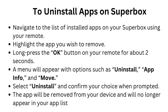To uninstall apps on Superbox, navigate to the list of installed apps on your Superbox using your remote. Highlight the app you wish to remove. Long press the OK button on your remote for about 2 seconds. A menu will appear with options such as Uninstall, App Info, and Move. Select Uninstall and confirm your choice when prompted. The app will be removed from your device and will no longer appear in your app list.